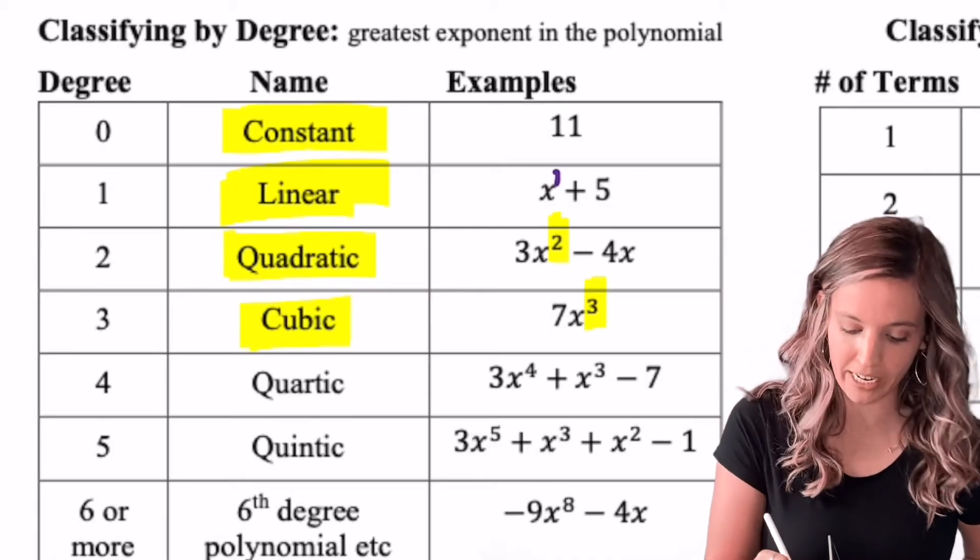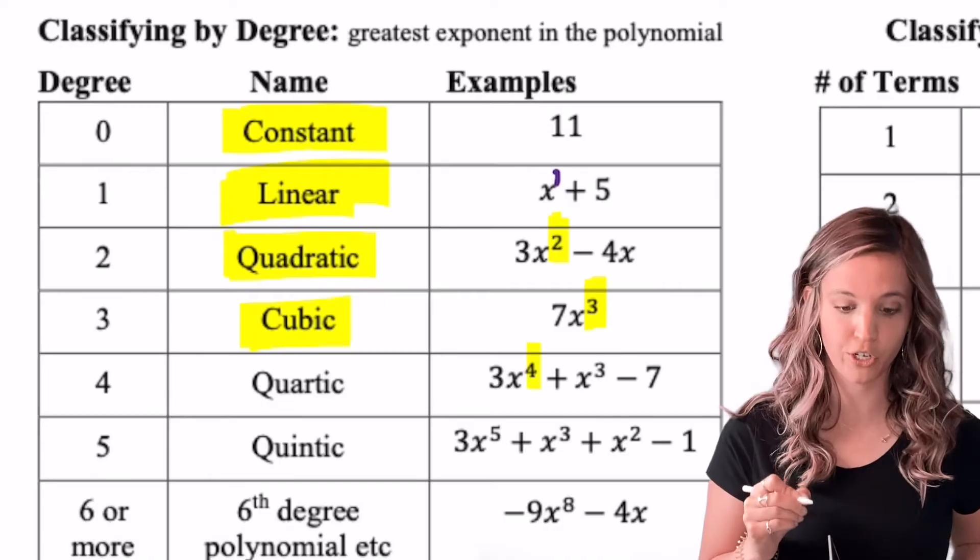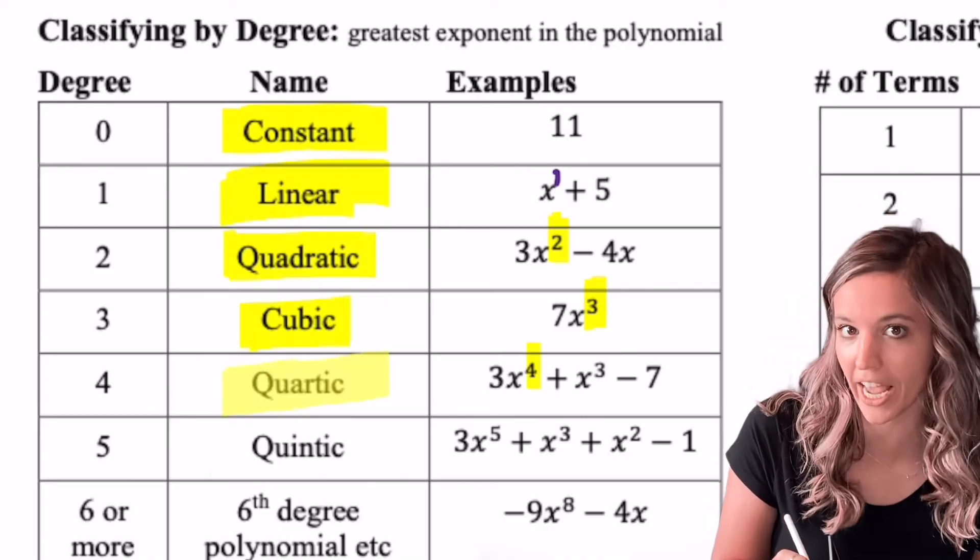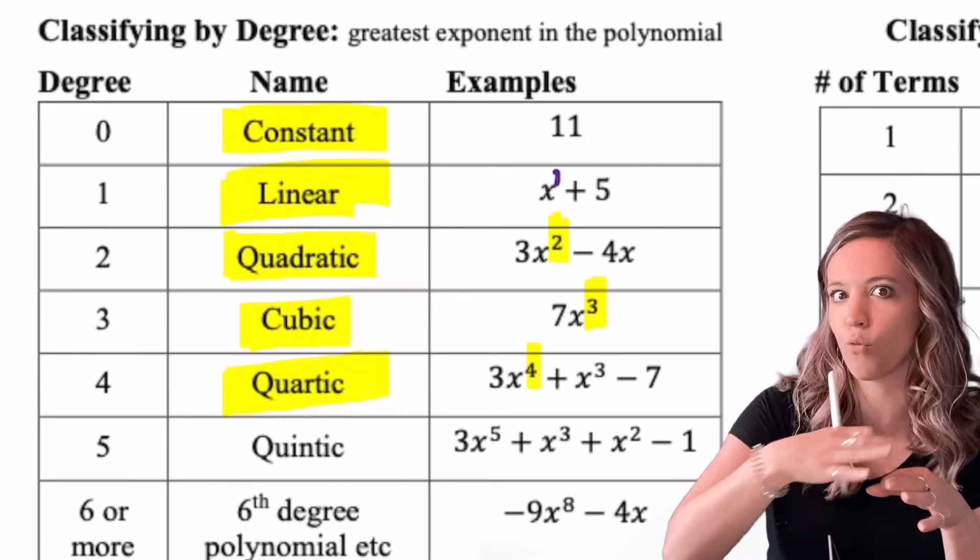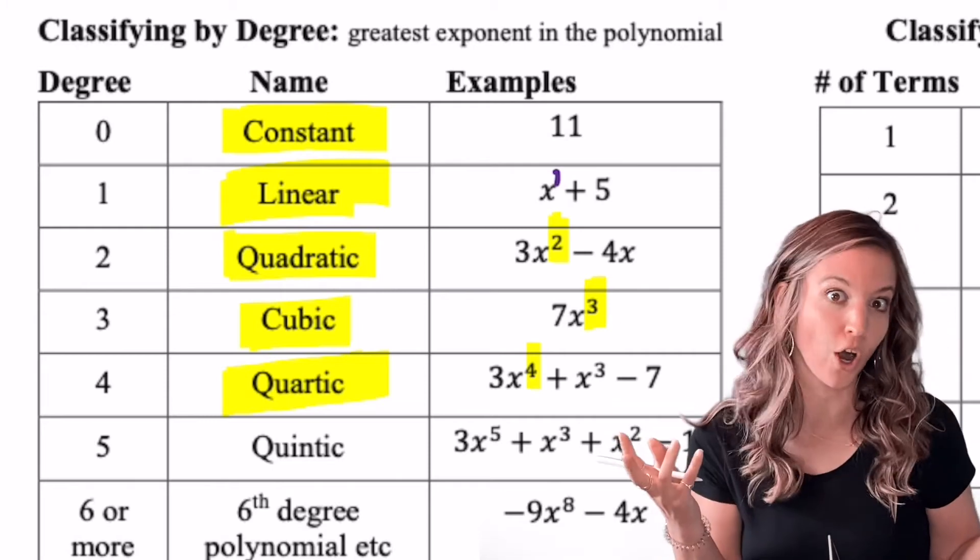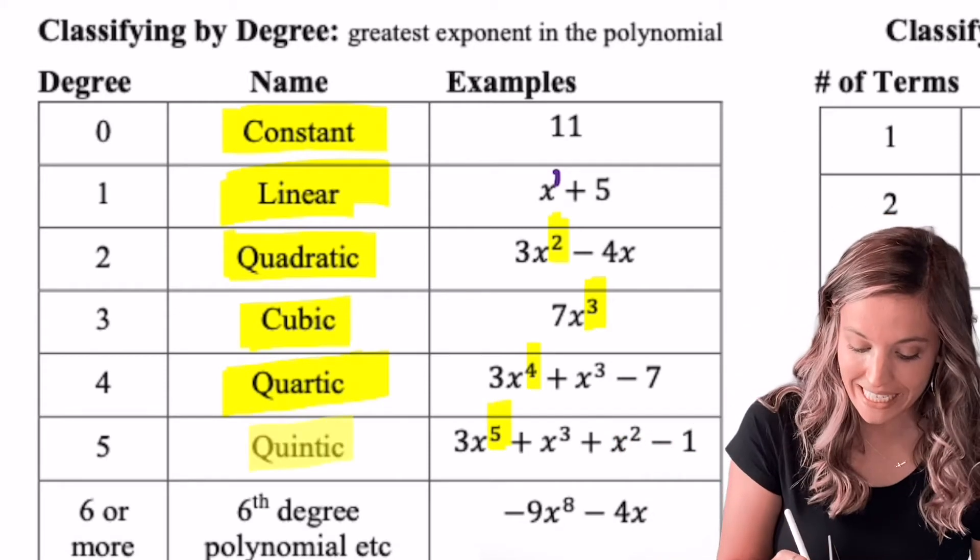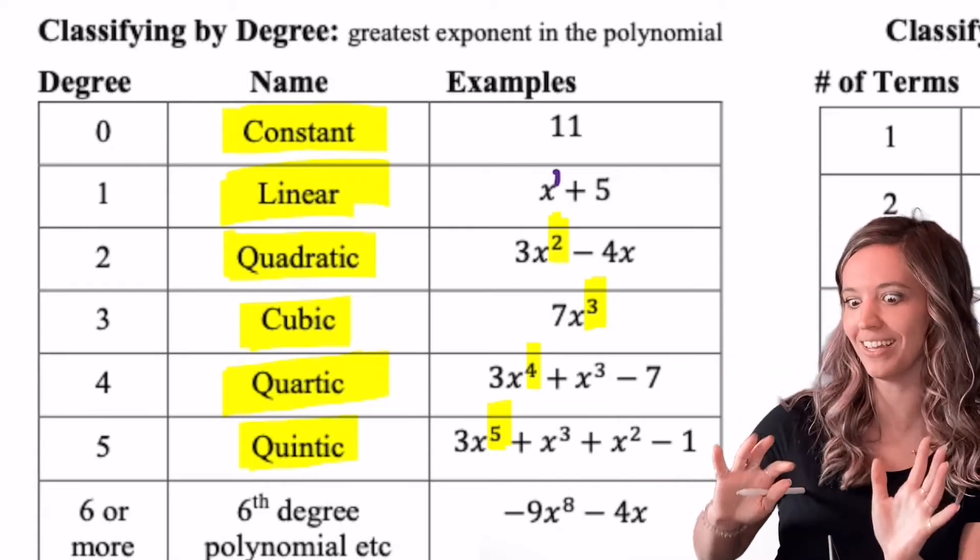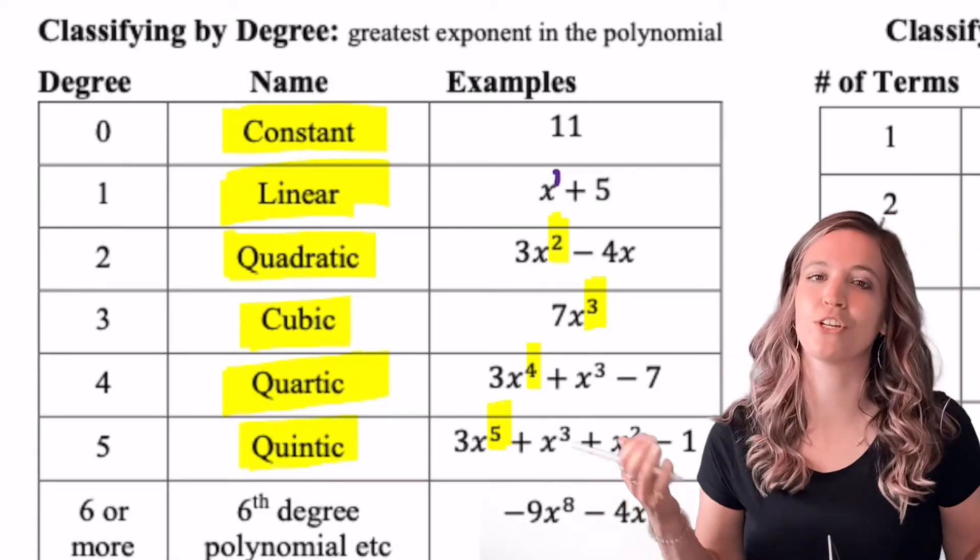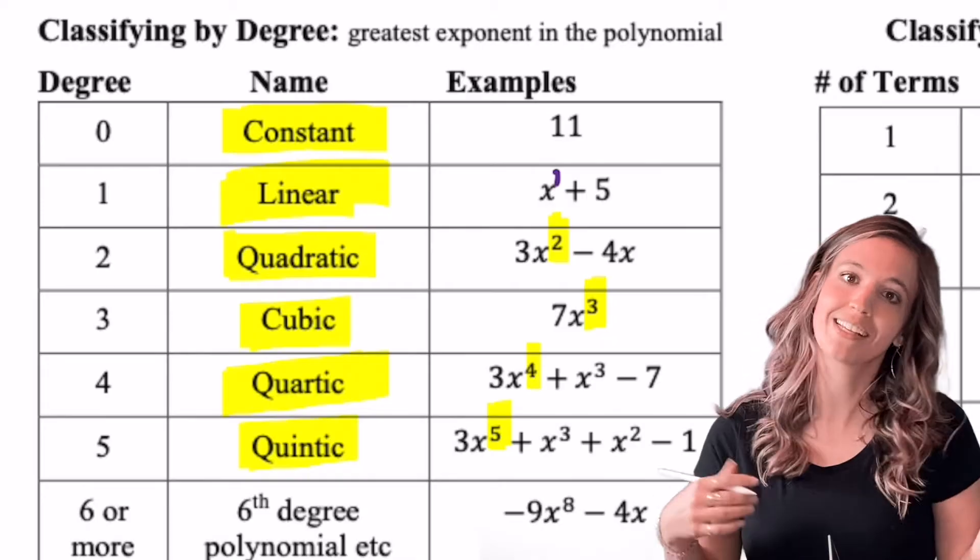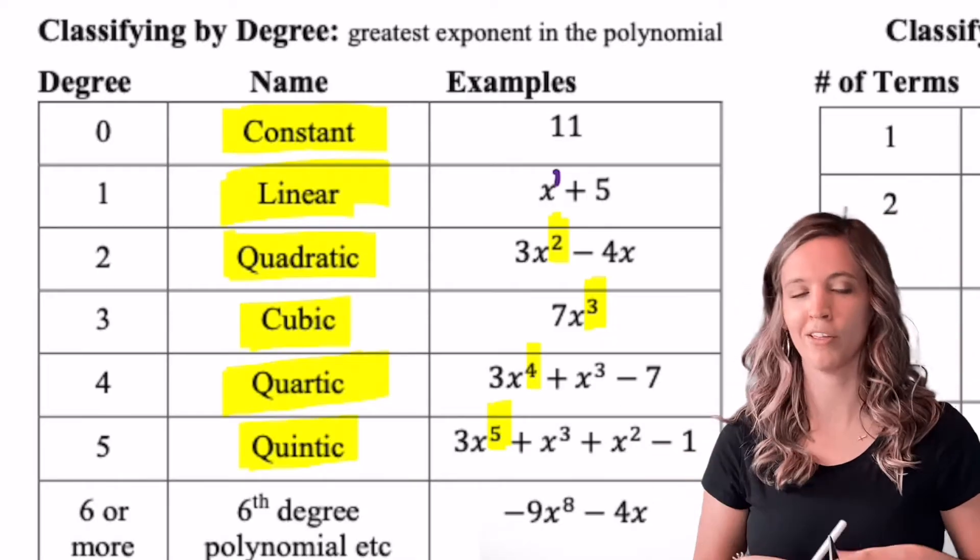If my highest exponent is 4, so my degree is 4, it's called a quartic - think of quarters, four quarters in a dollar. If my highest exponent is 5, it's a quintic, kind of like quince. Beyond that, we just use the number to describe the degree of the polynomial, like 6th degree polynomial, 7th degree polynomial, etc.